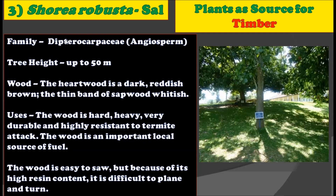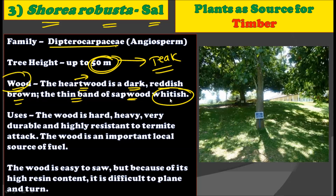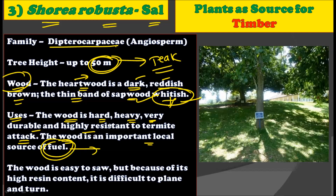The third plant which produces timber is Shorea robusta, commonly called Sal. This Shorea robusta plant belongs to the angiosperm family Dipterocarpaceae. This plant can grow up to a height of 50 meters, more than Tectona grandis. The hardwood is dark reddish brown in color, while thin bands of sapwood are whitish in color. The wood is hard, heavy, very durable, and highly resistant to termite attacks. The wood is also an important local source of fuel, and due to its natural resistance to termites, Shorea robusta timber has great economical importance.